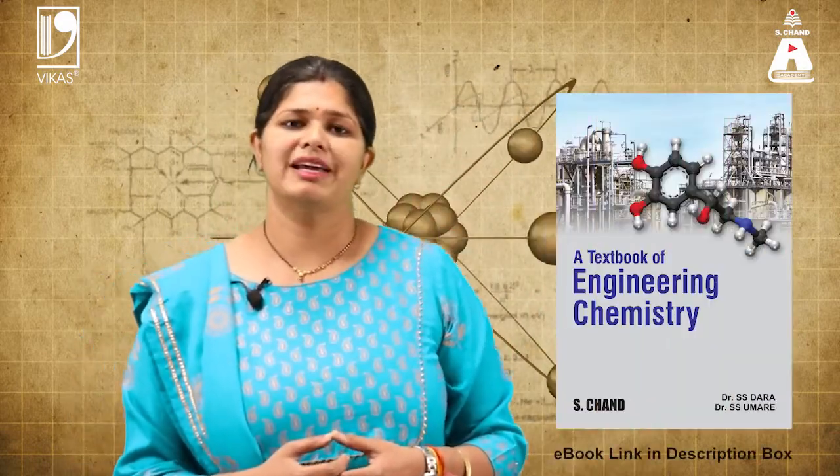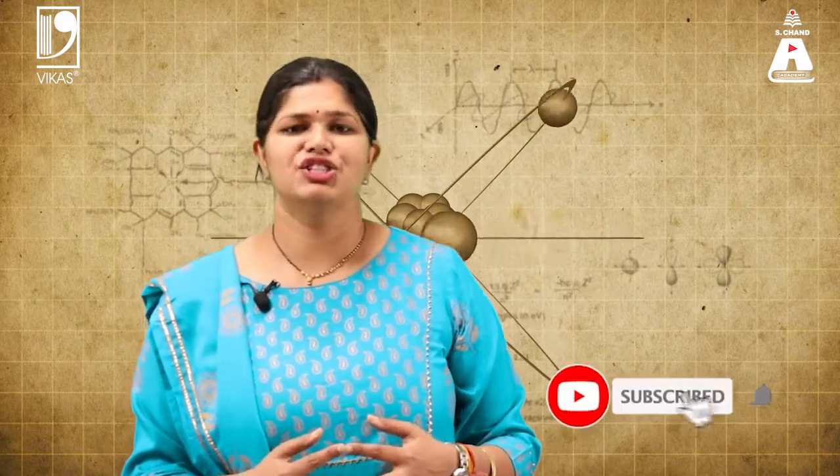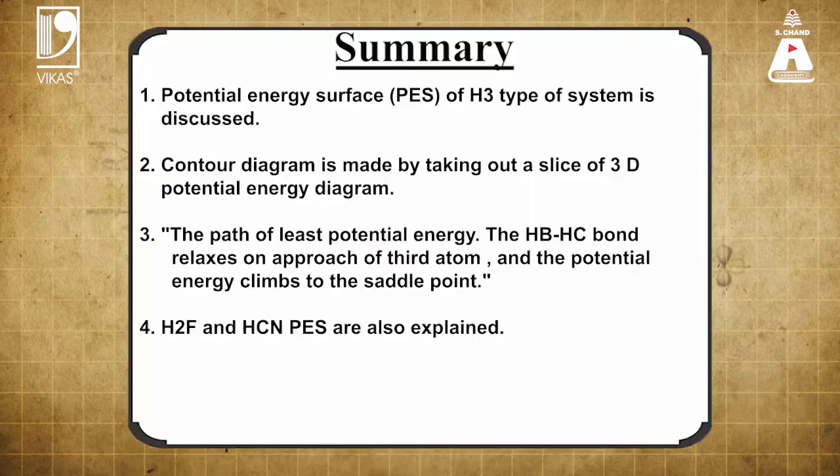In this part we have covered the potential energy surfaces of H3-type systems and learned how trajectories are studied on the potential energy map. We also focused on how replacing one atom with fluorine changes the potential energy surface. To know more, refer to the book by S.Chan Publishing — the link is in the description box. If you found this video interesting, please like, share, and subscribe to the S.Chan Academy channel, and press the bell icon for future updates. Thank you.